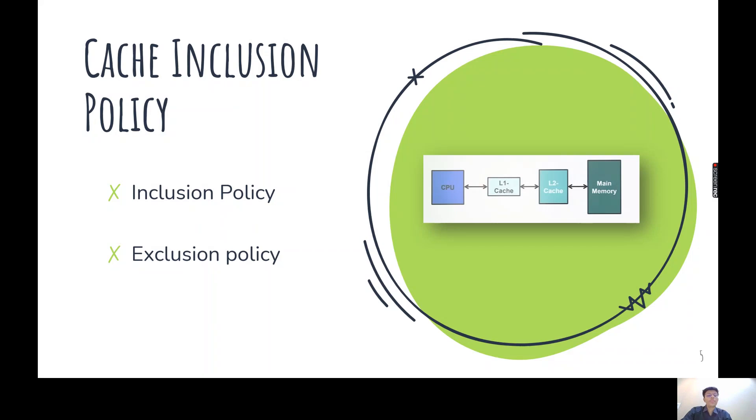There are two types of inclusion policies. Now you might think that the data in L1 maybe or must be present in L2. So there are two types of policies. That inclusion policy and exclusion policy. In inclusion policy, the data in L1 is already present in L2. Plus the data in L2 is also there that is not in L1. So the L2 is a parent. Or L2 is having more data than L1.